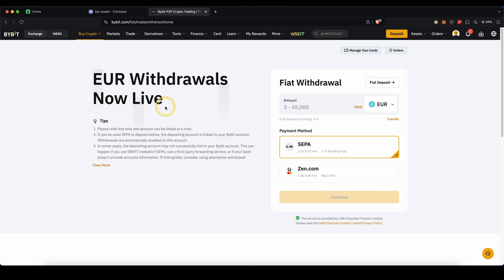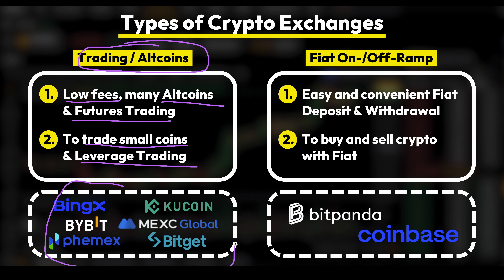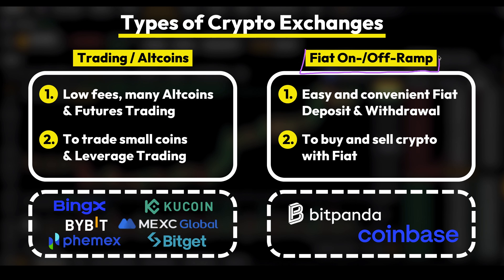If this works for you, great. If it doesn't — because maybe the country you're in doesn't support it or your fiat currency is not listed — then I will now show you a second option which will definitely work. Here is a quick overview of different types of crypto exchanges. On the left side, we have the typical trading exchanges, which typically have very low fees, many different coins, and are mostly also used for futures trading. They are perfect for trading smaller coins and using leverage trading. On the right side, we have the so-called fiat on and off ramp exchanges. They have the benefit of very easy and convenient fiat deposit and withdrawal methods, so whenever you want to interact with your own bank account in your local currency — such as euro, British pound, or US dollars — you can easily buy and sell crypto with your own fiat money.